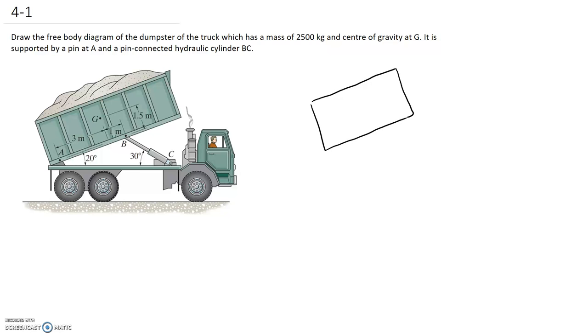The first force I'm going to apply is the weight of the dumpster itself. We're told it has a mass of 2500 kilograms, so we can convert that into a weight by multiplying by gravity. It's going to be 2500 times 9.8, which works out to be 24,500 newtons. We can say that this is going to act through the center of gravity as a point force, so I'm putting it on the diagram.